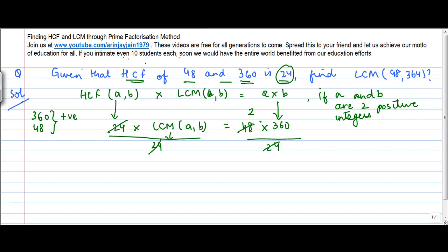This 24 goes into this 48 two times, so the LCM of these two numbers is 2 into 360, or 720.